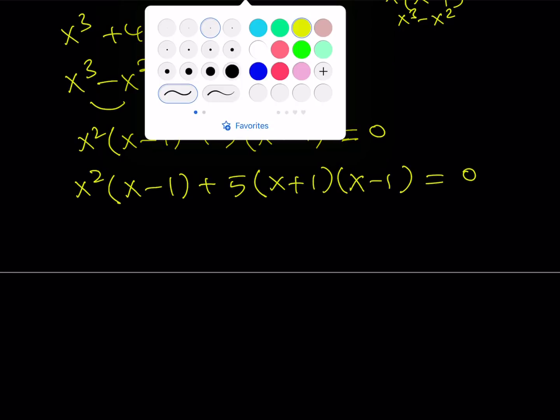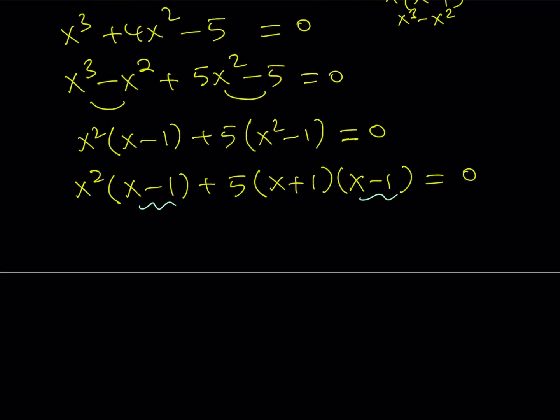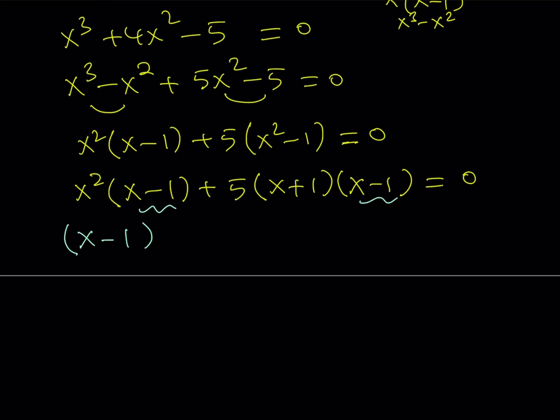Now, I have x minus 1 as a common factor. That shouldn't be a surprise. x minus 1 is a common factor because x equals 1 is a solution. So let's go ahead and take out x minus 1 and try to find the other solutions. And from here, we're going to be getting the following. The first term is going to be x squared and then we're going to follow up with, we're going to have to distribute the 5 here, plus 5x plus 5.